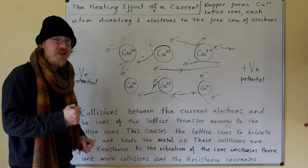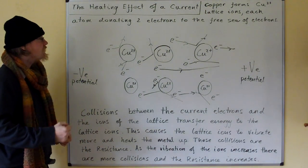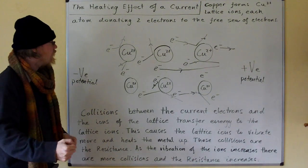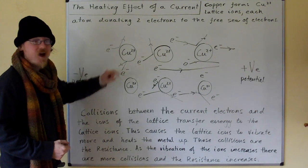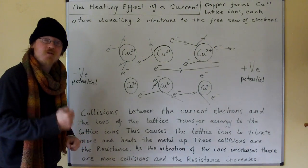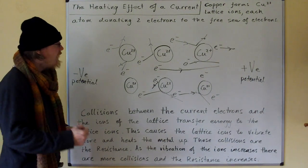Copper forms Cu2+ lattice ions, each atom donating two electrons to the free sea of electrons. So each of these copper ions in the lattice has donated two electrons to the free sea of electrons and become a Cu2+ ion.